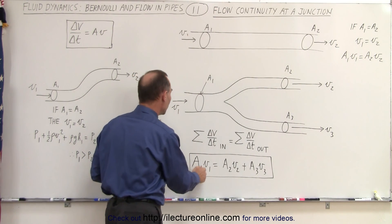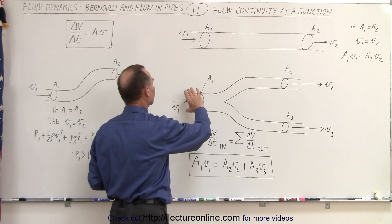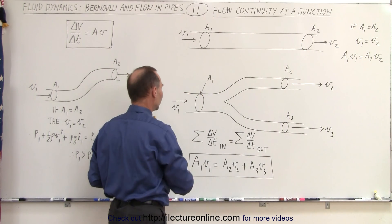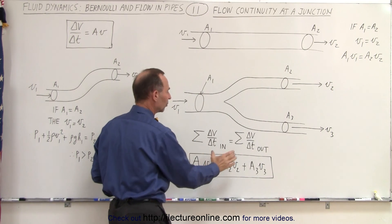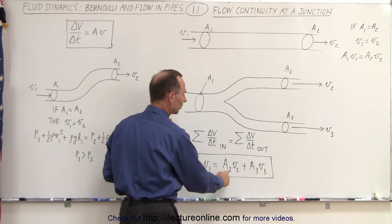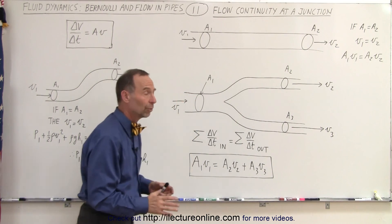we can say that A1V1, the product of the cross-sectional area times velocity here, which is the sum of all the delta V delta T's going into the junction, equals the sum of the delta V delta T's out, A2V2 plus A3V3.